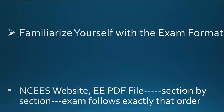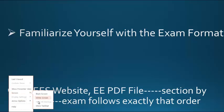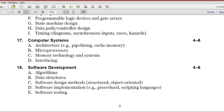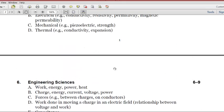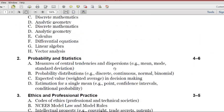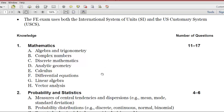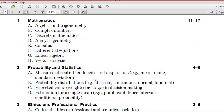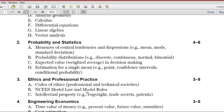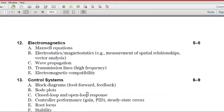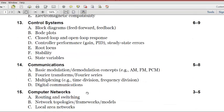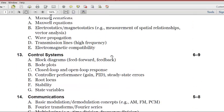And then you download your PDF file that contains all the sections. So this is the electrical part. The way the exam works is that it follows these sections in this particular order, meaning you're going to have math, the first 11 to 17 questions are going to be math, next will be probability, next will be ethics, all the way to software development in this case.